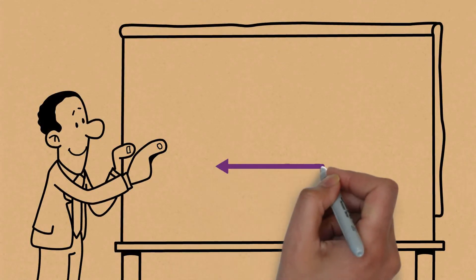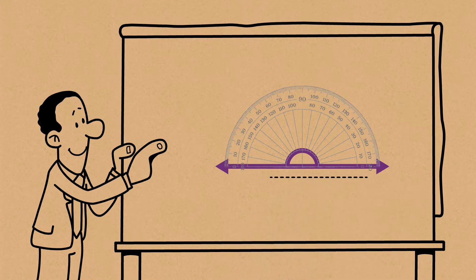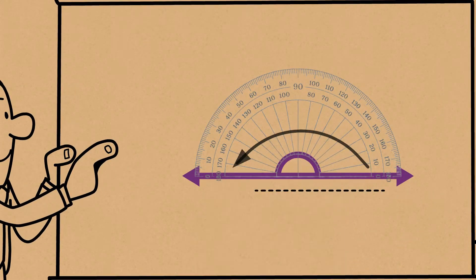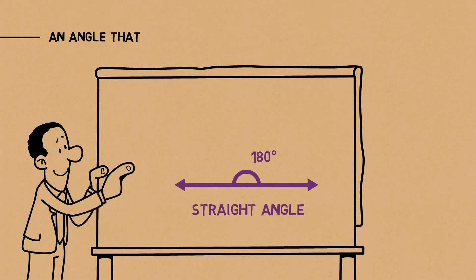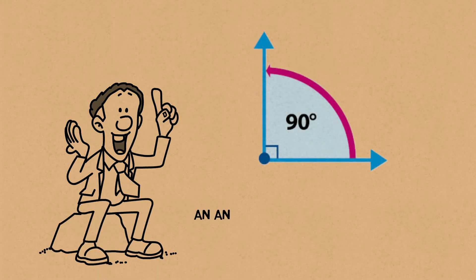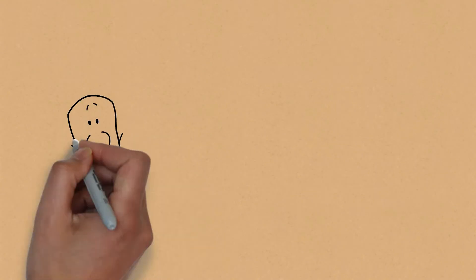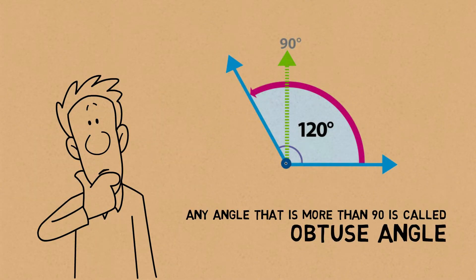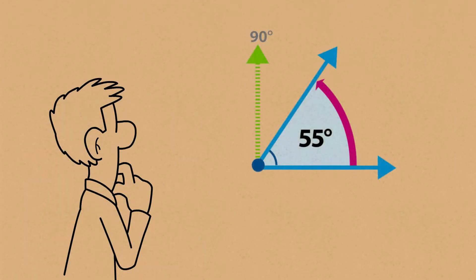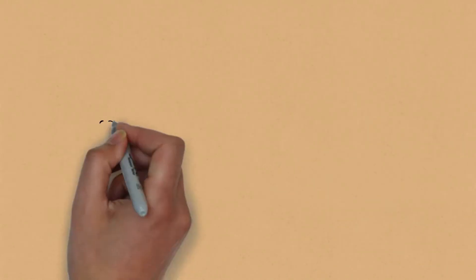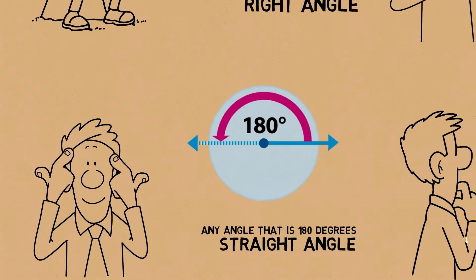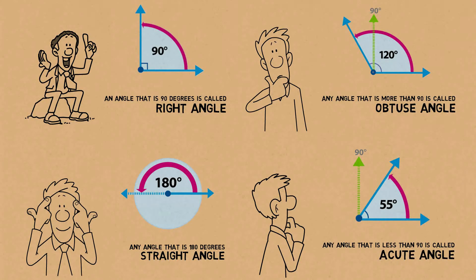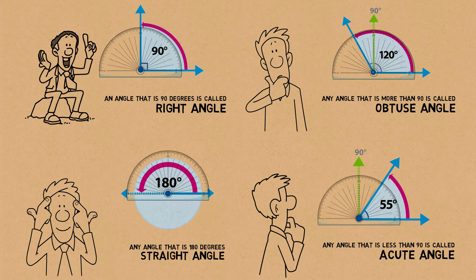And over here, if you have a straight line with the base on zero and keep measuring towards the next line, you see that it's 180 degrees. So an angle that is 180 degrees is called a straight angle. To summarize: an angle of 90 degrees is called a right angle; any angle more than 90 is called an obtuse angle; any angle less than 90 is called an acute angle; and any angle that is 180 degrees is called a straight angle. These are the types of angles, and this is how we measure them using a protractor.